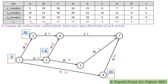For activity E, start time = 7.8 and finish time = 7.8 + 20 = 27.8. For activity F, start time = 20 and finish time = 29. Observe that event 6 is a merge event for activities F and E. Among the two finish times 29 and 27.8, we consider the maximum finish time, which is 29.